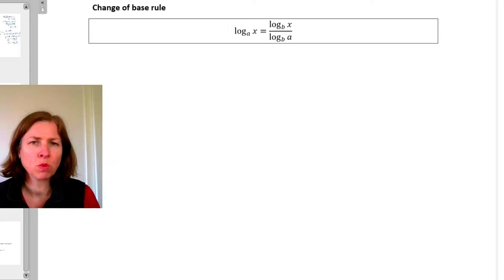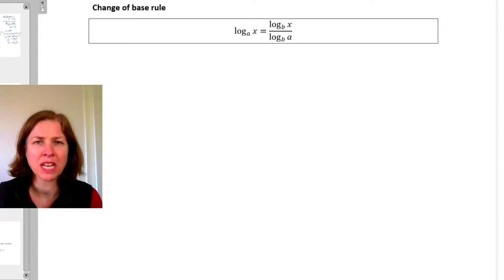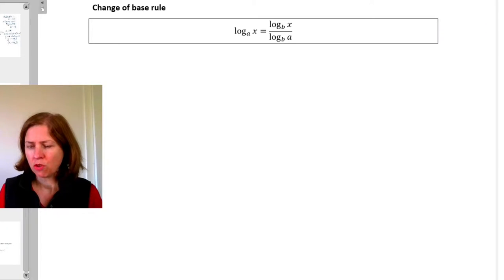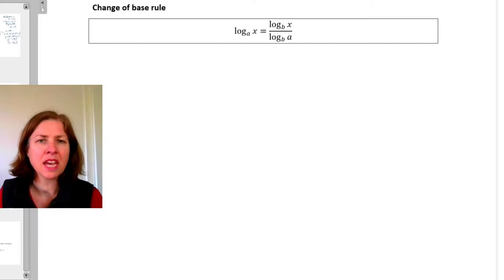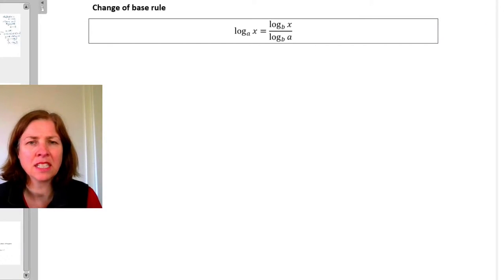The change of base rule can be used both for a logarithm and also for an exponential expression. The rule is written there: log base a of x equals log base b of x over log base b of a. That means that instead of writing something as a single logarithm, I can change the bases and there might be lots of reasons why I would like to do that.